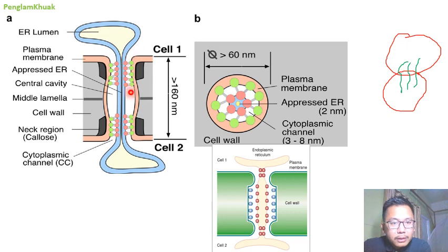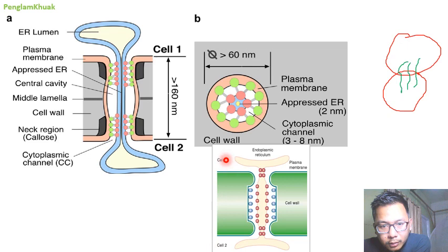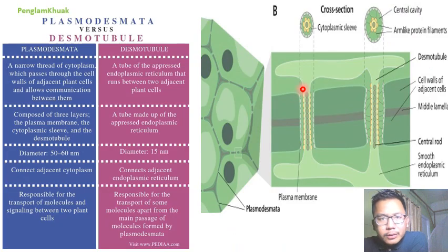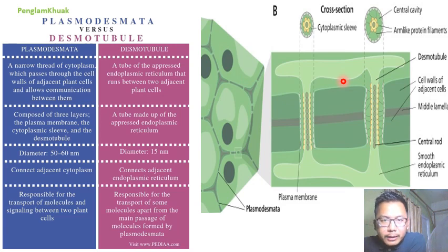Proteins, mRNA, and different substances are passed from one cell to another cells through plasmodesmata. During cytokinesis, a small amount of endoplasmic reticulum is present between two newly divided plant cells — these cells still share the endoplasmic reticulum and because of that they form plasmodesmata. The desmotubules are an endomembrane-derived structure of the plasmodesmata that connect the endoplasmic reticulum of two adjacent plant cells.